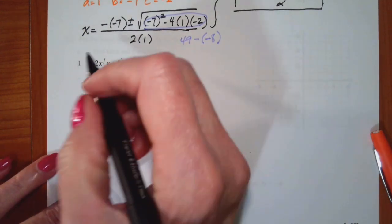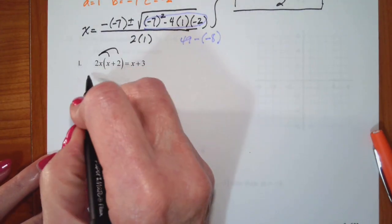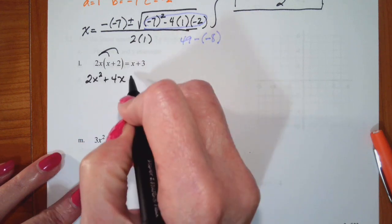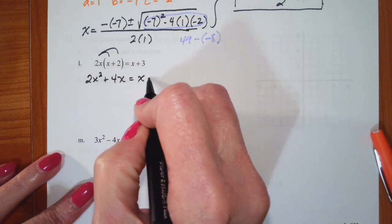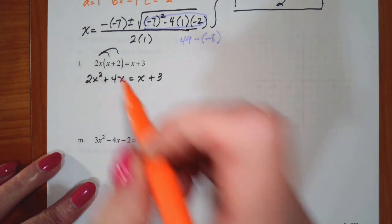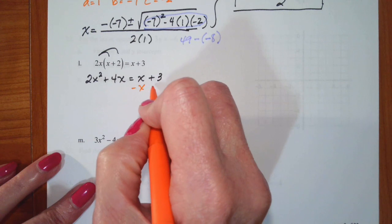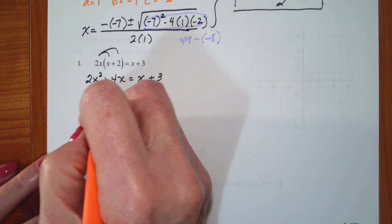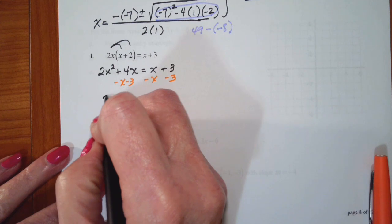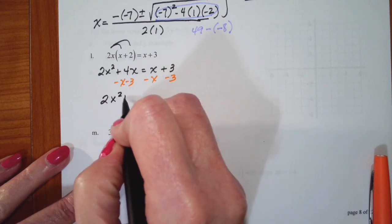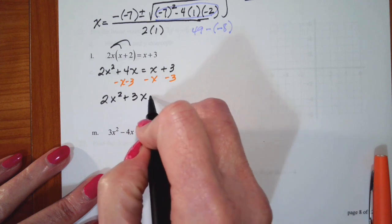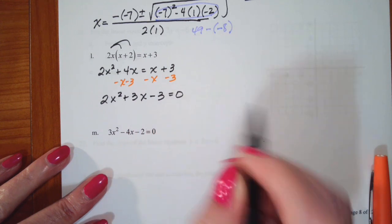On problem L, I'm going to distribute first. This gives me 2x squared plus 4x is equal to x plus 3. I'll subtract x and subtract 3 from both sides. That gives me 2x squared plus 3x minus 3 is equal to 0.